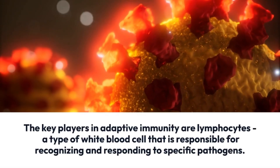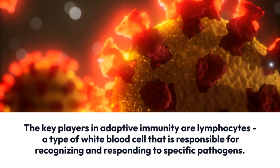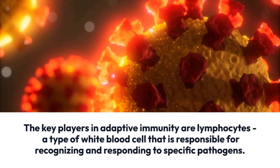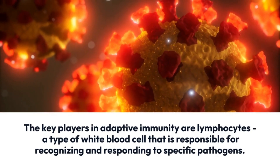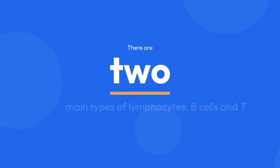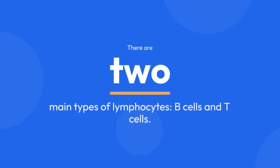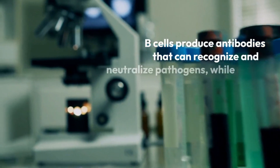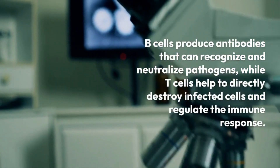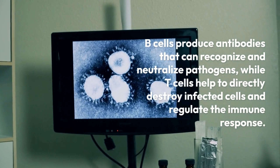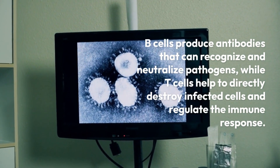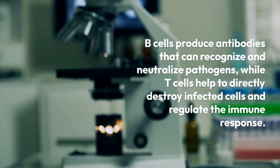The key players in adaptive immunity are lymphocytes, a type of white blood cell that is responsible for recognizing and responding to specific pathogens. There are two main types of lymphocytes: B-cells and T-cells. B-cells produce antibodies that can recognize and neutralize pathogens, while T-cells help to directly destroy infected cells and regulate the immune response.